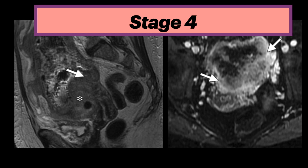Here is stage 4a endometrial cancer. The sagittal T2 on the left shows a large endometrial tumor invading the sigmoid colon, as evidenced by loss of the normal fat plane between the tumor and colon, denoted by the arrow. The contrast-enhanced MR on the right shows invasion of the sigmoid colon by the enhancing tumor, confirmed at histologic analysis.